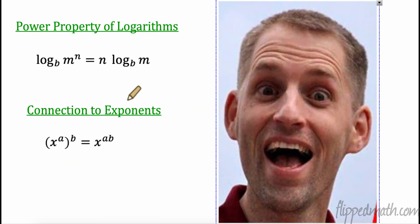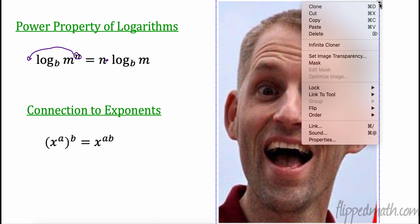And in fact, that is what we can do. This is called the power property of logarithms. What it says is when I have a log base b of something to an n power, I can move that power to the front and multiply. So I'm going to do n times log b of m. How does this connect to our exponents? Well, remember, a power to a power, I multiply those. So that's how this connects. You can see and understand better that these logarithms definitely connect to everything we've been doing for the last two units.